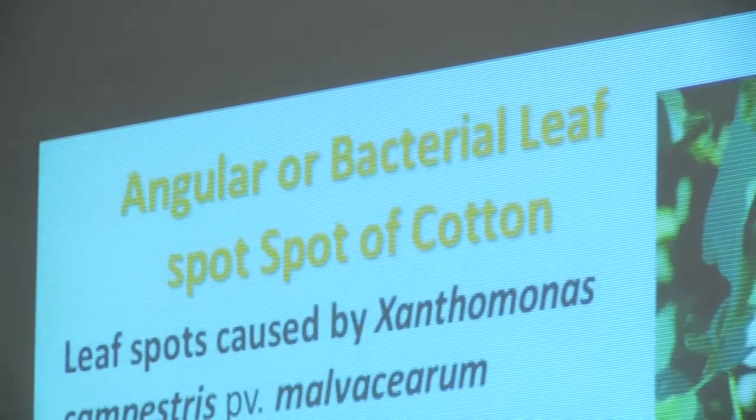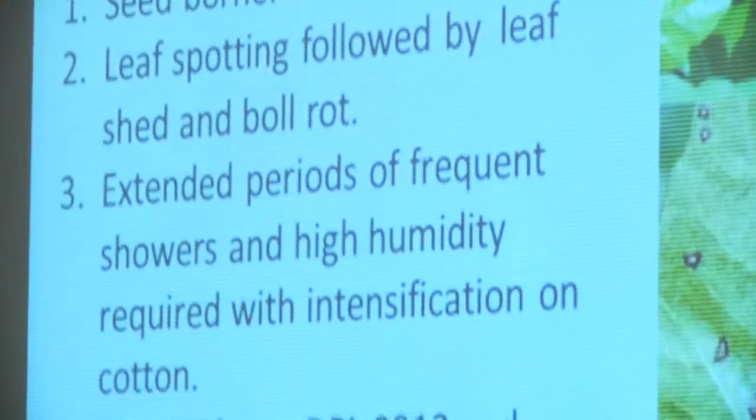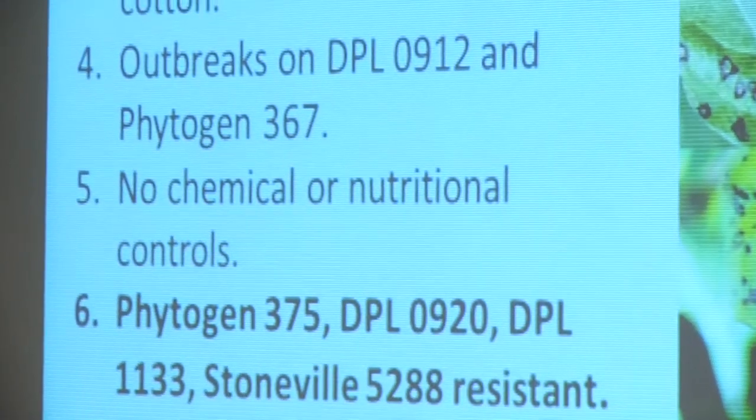This disease is seed transmitted, so there are some issues with seed fields. If the seed comes out of California's Central Valley where humidity is low, you will not see this disease at all. They do have some problems in Mississippi, mainly on DPL 0912 and Phytogen 367 in recent years, so if you have those varieties out there you might want to keep an eye on them. There aren't any controls for it once it shows up, but several varieties including DPL 375, DPL 0920, 1133, and Stoneville 5288 are resistant.